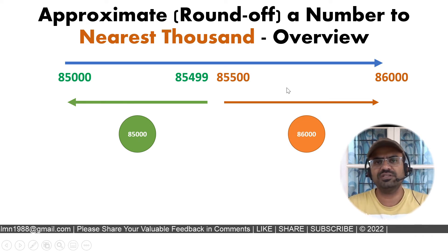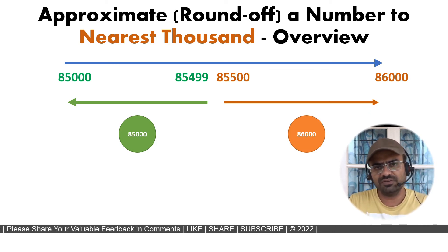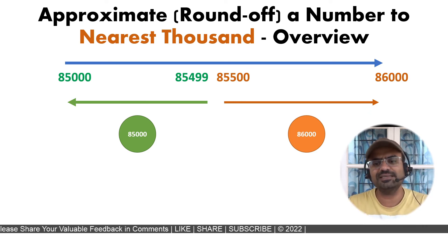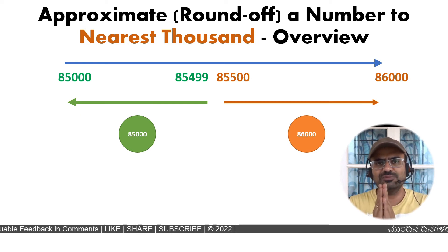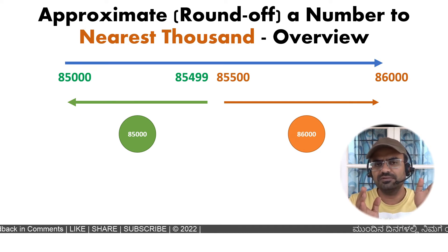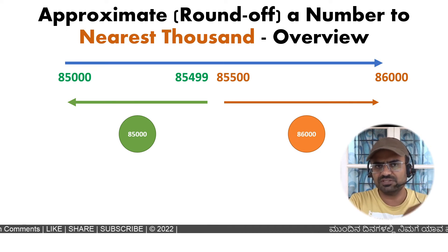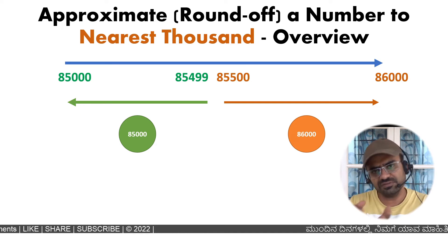So the rule is: if the last 3 digits are 0 to 499, the previous thousand is the answer. If the last 3 digits are 500 to 999, the next thousand is the answer. That is the core rule for rounding to the nearest thousand.